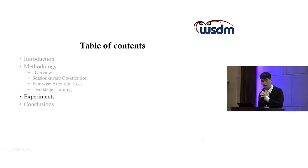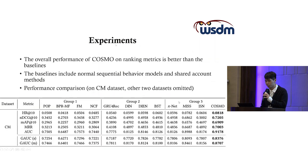Let's talk about the experiments and results. I do the experiments on three datasets. One of them is the China Mobile dataset, which is one of the biggest Chinese TV service providers. The overall performance of COSMO on ranking metrics is better than other baselines, which include normal sequence behavior models like DIN and shared account methods.